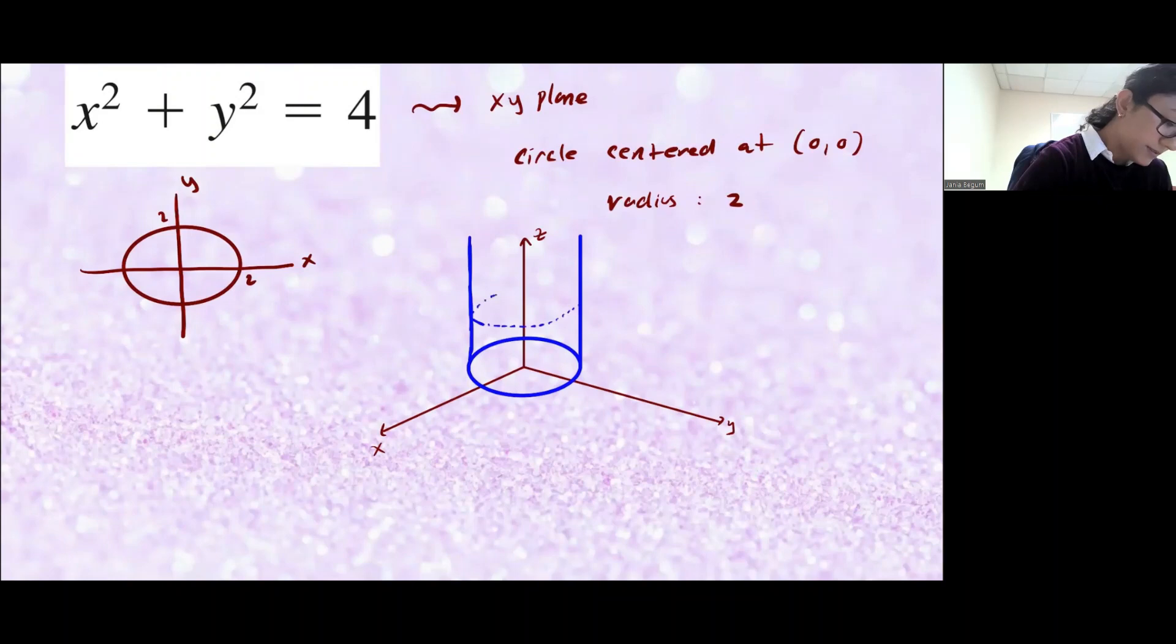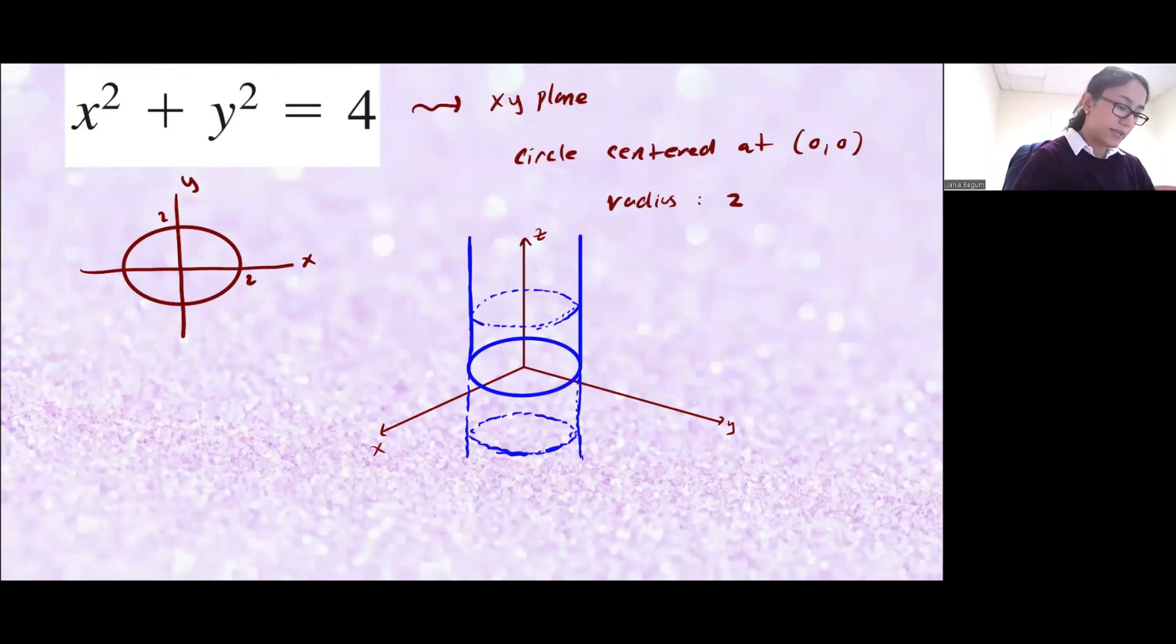Hopefully you can use your imagination to see this. And of course it's going to go in the negative z direction as well because z could be really any value. This is what we call a cylinder generated by these circles in the xy plane.